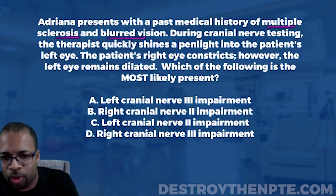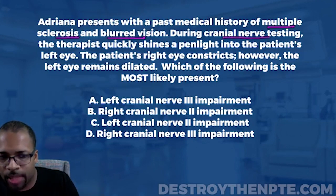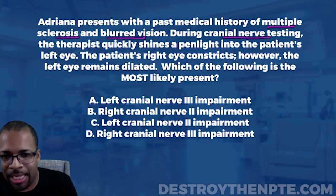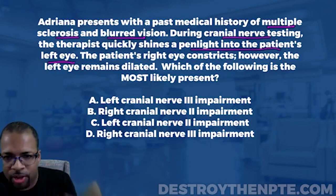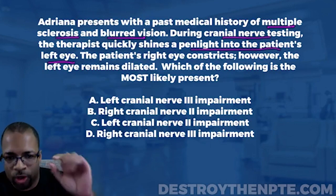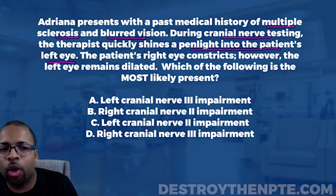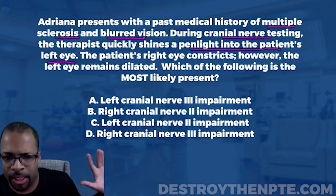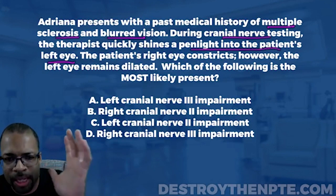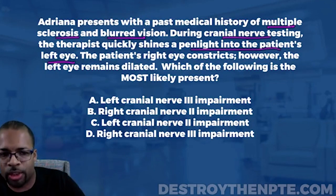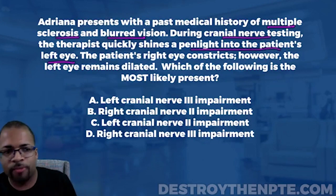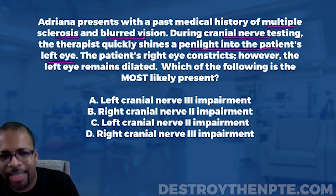During cranial nerve testing, the therapist quickly shines a penlight into the patient's left eye. Think back to your cranial nerve testing — when you're shining that penlight into the patient's eye, what should happen? In the eye that you're shining the light into, you should see pupil constriction. That's normal.